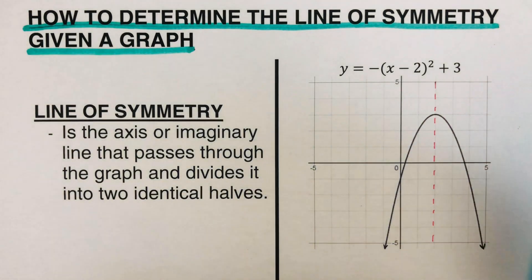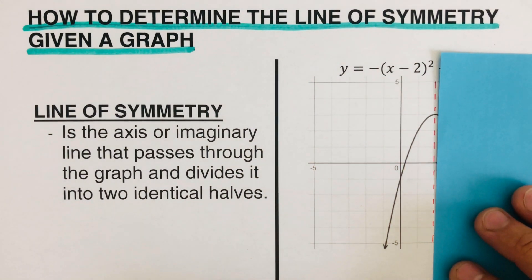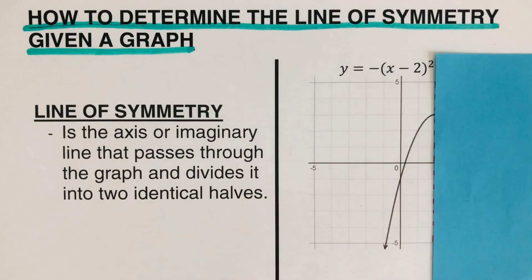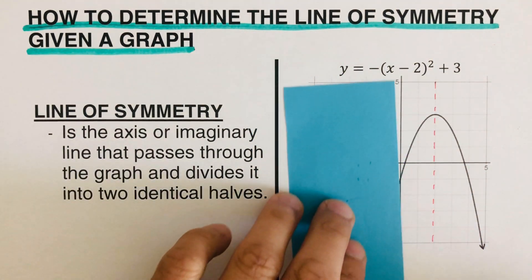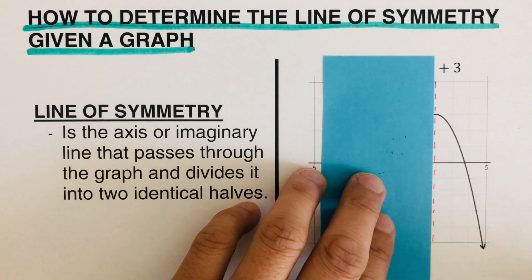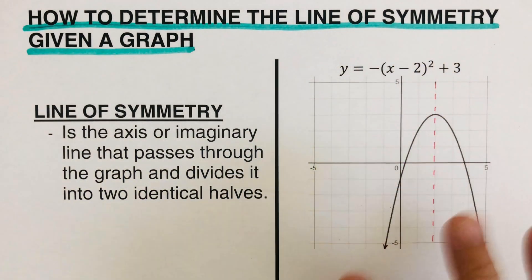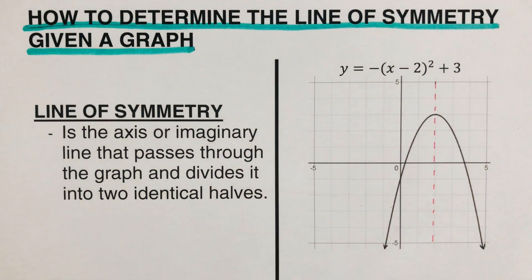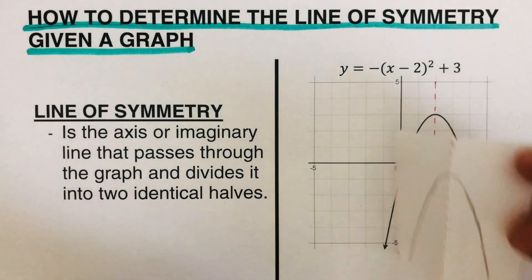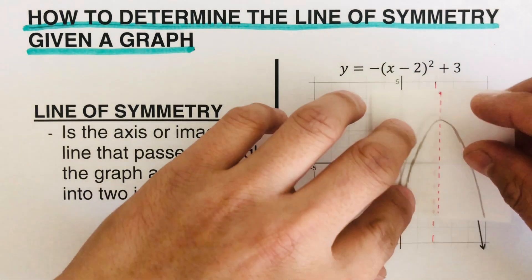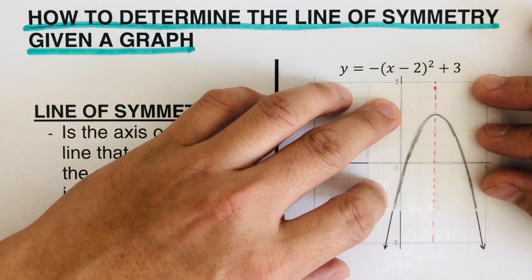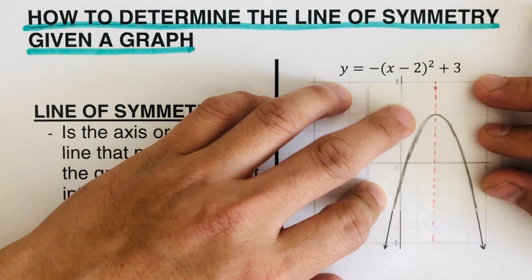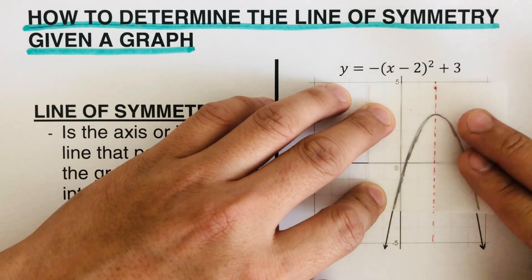This is true because if we were to cover the first half of this graph and match it up on the other half — that's the first half and this is the other half — this line actually divides this graph into two equal parts. I have here a patty paper to better show what the line of symmetry is, and it exactly matches up with the original picture.